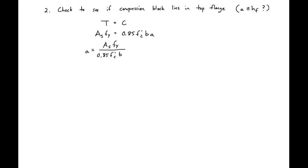So our next step is to check and see if our compression block still lies within our top flange. We're looking to see if our A is less than the height of our flange. We can do this through equilibrium. Setting T equal to C we can solve for our A and then we just plug in our values.